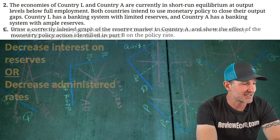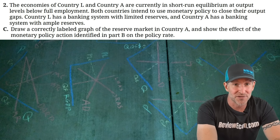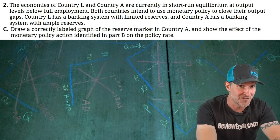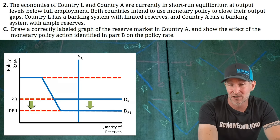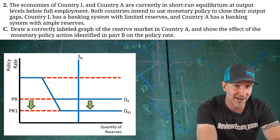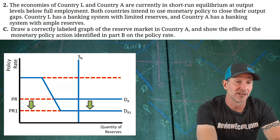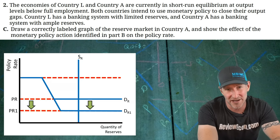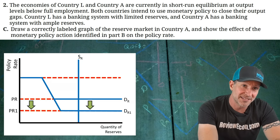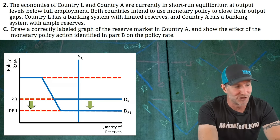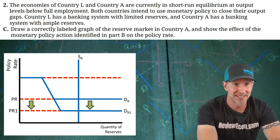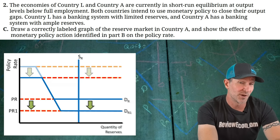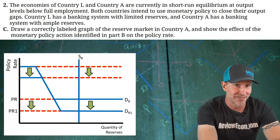For Part C, we draw the reserves market graph. Make sure you have quantity of reserves on the x-axis and policy rate on the y-axis. If you said decrease interest on reserves, shift the lower bound of the demand curve downward to show the lower policy rate and the new equilibrium policy rate. If you said decrease administered rates, you shift both the top and the bottom of the corridor downward.